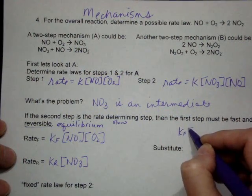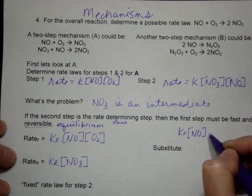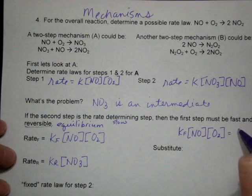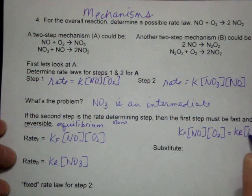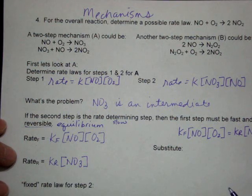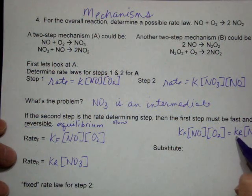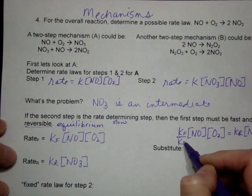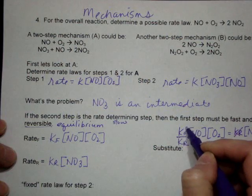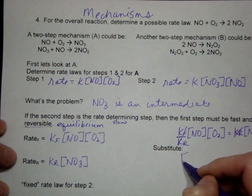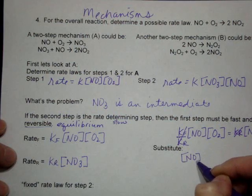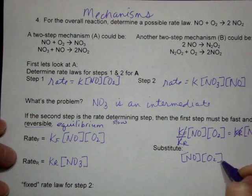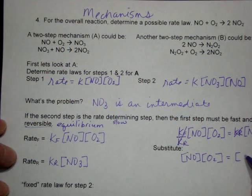By the definition of equilibrium, these two are then equal to each other. So K forward times NO times O2 equals K reverse times NO3. Based on the fact that these rates are the same, the rate forward, the K forward, and the K backward are also the same. So they would basically cancel out. That would become one, which would allow us to say that the concentration of NO times the concentration of O2 should be equal to the concentration of NO3.